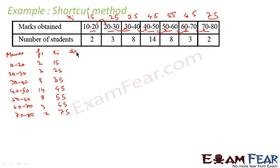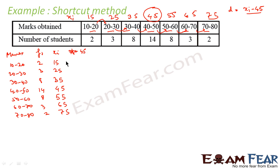d is nothing but (xi − assumed mean). There are 7 classes, so the middle one is the 4th, which gives us 45. Let's assume the mean A = 45 — this is not the correct mean yet; we'll find the exact mean. So let's compute xi − 45 for all values: 15 − 45 = −30, 25 − 45 = −20, 35 − 45 = −10, 45 − 45 = 0.